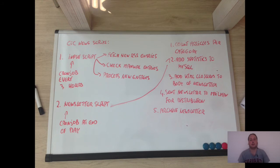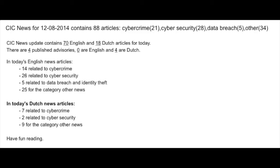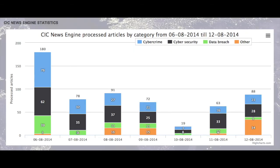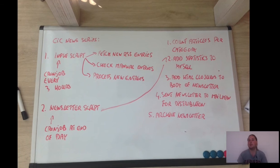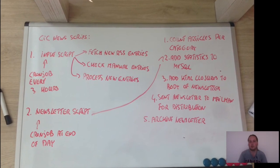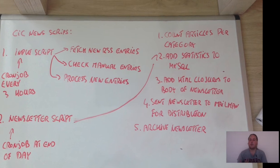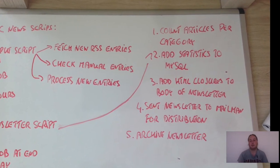The other main script is the newsletter script. This script does the following: first, it counts all the articles per category. Second, it writes those statistics to the MySQL database, so the graphs on the website are loaded from the MySQL database. Third, it adds the HTML closures to the body of the generated newsletter so that all the appropriate HTML tags are closed properly.